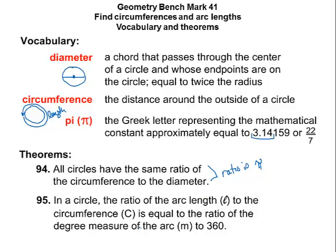In a circle, the ratio of the arc length to the circumference equals the ratio of the degree measure of the arc to 360. So arc length over circumference equals arc measurement over 360. You can also find arc length by taking the circumference and multiplying it by the arc measure divided by 360. Both methods give the same answer — pick whichever you prefer.